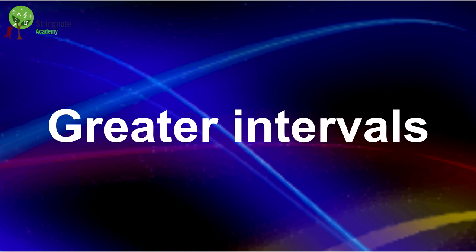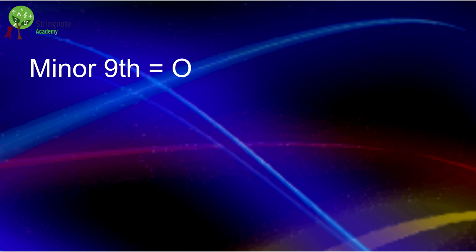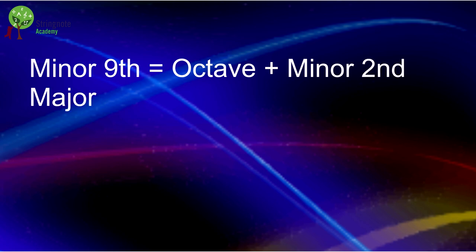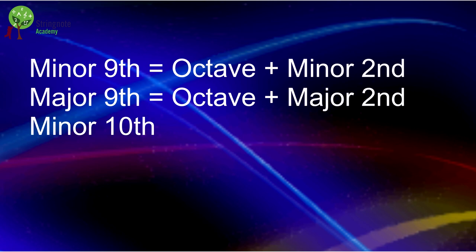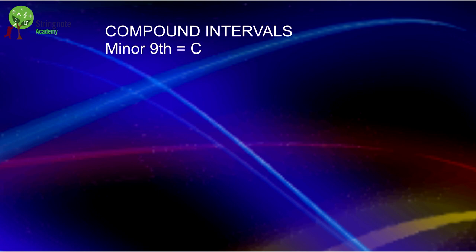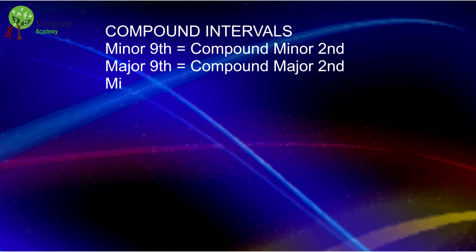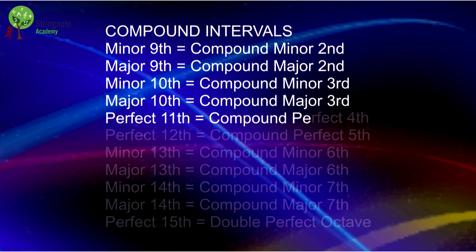Now, how about intervals greater than an octave? Well, once you understood the conventional intervals, intervals greater than an octave can be treated in the same way. A minor ninth is simply the equivalent of an octave plus a minor second. A major ninth is the equivalent of an octave plus a major second, and so on. That is why a major ninth is also known as a compound major second. This is a table of equivalence: minor ninth is a compound minor second, major ninth is a compound major second, minor tenth is a compound minor third, major tenth is a compound major third, a perfect eleventh is a compound perfect fourth, and so on.